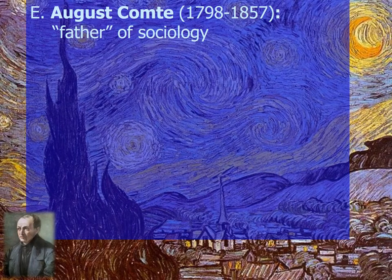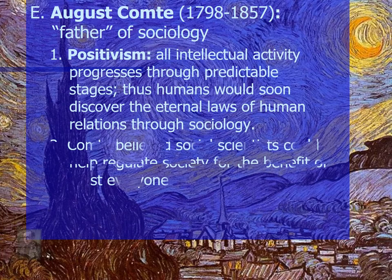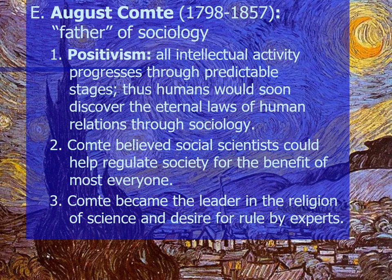Auguste Comte, 1798–1857, known as the father of sociology, came up with the concept of positivism — the belief that all intellectual activity progresses through predictable stages, and that humans would soon discover the eternal laws of human relations through sociology. Comte believed social scientists could help regulate society for the benefit of most everyone, and became the leader of the religion of science and the desire for rule by experts.